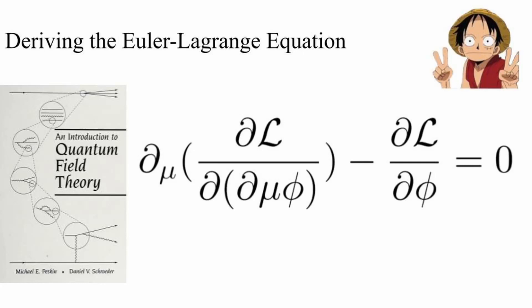What's up everyone, it's QuantumPinguino. Today we're going to be deriving the Euler-Lagrange equations from the principle of least action as argued in Peskin and Schroeder chapter 2.